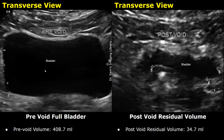This is an example of a normal post-void residual volume. The image on the left shows a pre-void full bladder with a pre-void volume of 408.7 milliliters. The image on the right shows the bladder after urination — it appears smaller. The post-void residual volume was 34.7 milliliters. You can easily see a small bladder.